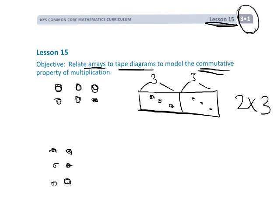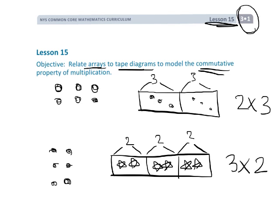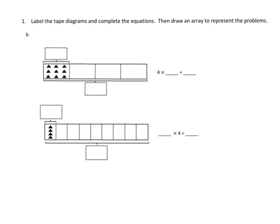Similarly, we might have the array rotated 90 degrees, so that'd be three rows of two. The tape diagram might look like this with a two in each box — three groups of two. So three times two equals six, and two times three equals six. That's the commutative property.